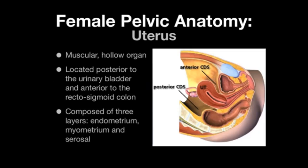Let's look at the sonographic anatomy of the female pelvis. Starting with the uterus: it's a muscular, hollow organ located posterior to the urinary bladder and anterior to the rectosigmoid colon. It's composed of three layers — the endometrial layer, the myometrial layer, and the serosal layer. The only two layers visible with ultrasound are the myometrial and the endometrial layers.